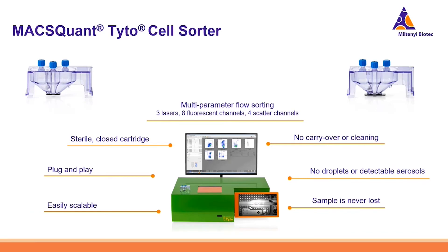Let's have a closer look at the MaxQuantito cell sorter. It is a multi-parameter flow sorting device with three lasers and eight fluorescence channels plus scatter channels. Everything happens in a closed cartridge — everything is sterile, it's an easy plug-and-play system, and it's also easily scalable. Because of the closed cartridge, there is no carryover and no cleaning needed since there are no fluidics in the instrument itself. There is also no droplet or aerosol production, and samples are never lost — all cells are regained in the cartridge.